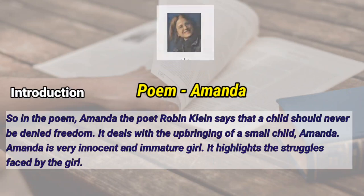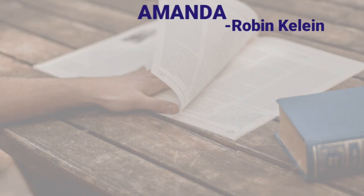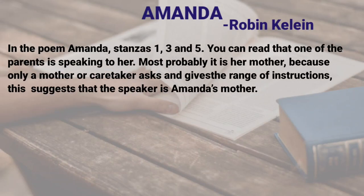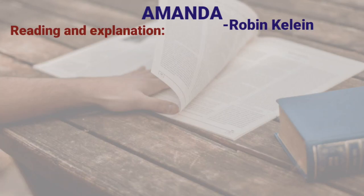Amanda is a very innocent, immature girl. It highlights the struggles faced by the girl. In the poem Amanda, stanza 1, 3, and 5, you can read that one of the parents is speaking to her — most probably her mother — because only a mother or caretaker asks and gives a range of instructions. Stanza 2, 4, and 6 are given in parenthesis because they reflect the inner thoughts of Amanda. So the speaker here is the little girl, Amanda. Let me read the poem and explain each stanza.